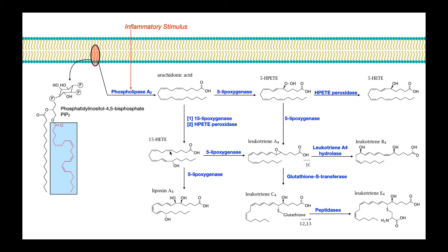The other direction 15-HETE can go — via the same enzyme, 5-lipoxygenase — converts 15-HETE into leukotriene A4. This is the first true leukotriene made, so in some ways you could consider it the parent leukotriene. It does have leukotriene function by itself, but as you can see, it can be converted either directly or indirectly to three other leukotrienes. Also notice that 5-HPETE from earlier can also be converted to leukotriene A4, again by this same enzyme, 5-lipoxygenase.